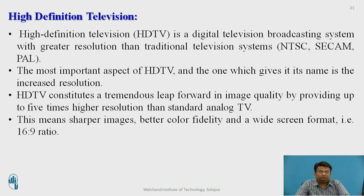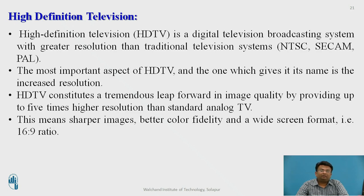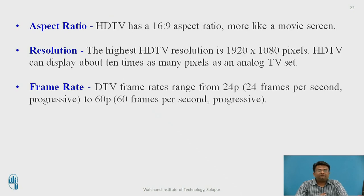High Definition Television (HDTV) — the most important aspect is its increased resolution. HDTV constitutes a tremendous leap forward in image quality by providing up to five times the resolution of standard analog television. This means the image is sharper and has better color fidelity. Widescreen format of 16:9 is available. The aspect ratio of HDTV is 16:9, more like a movie screen, with a resolution of 1920×1080 pixels and frame rates ranging from 24 to 60 frames per second.